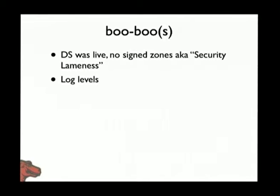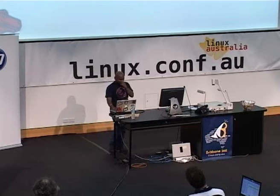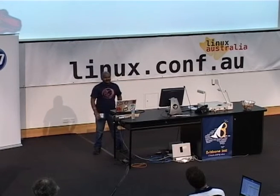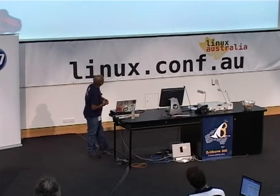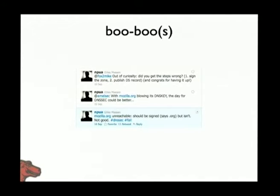The mistakes I made: security lameness — the DS records went out before I could push out my signed zones. So for a period of time people were saying this is not working. The default log levels on BIND for DNSSEC are set to debug, which will fill your logs and your disk space pretty fast if you're not careful. And Twitter was there to fail me — Mozilla.org has a DNSSEC problem — marked as insecure.